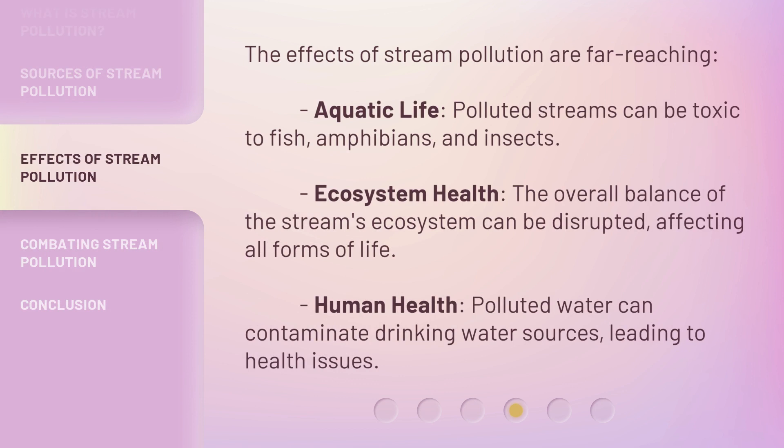The effects of stream pollution are far-reaching. Aquatic life: polluted streams can be toxic to fish, amphibians, and insects. Ecosystem health: the overall balance of the stream's ecosystem can be disrupted, affecting all forms of life. Human health: polluted water can contaminate drinking water sources, leading to health issues.